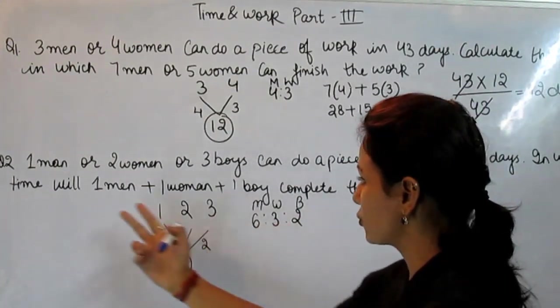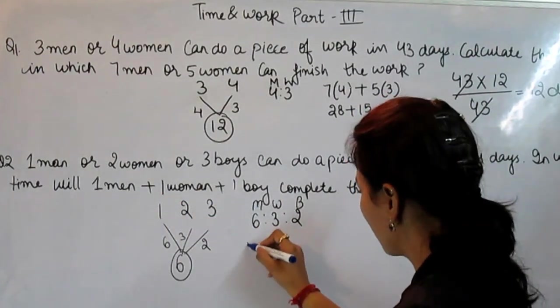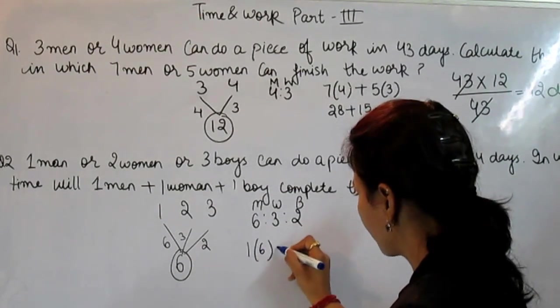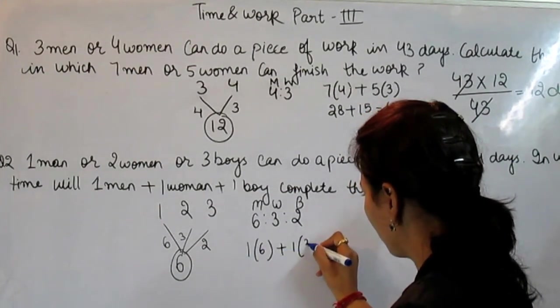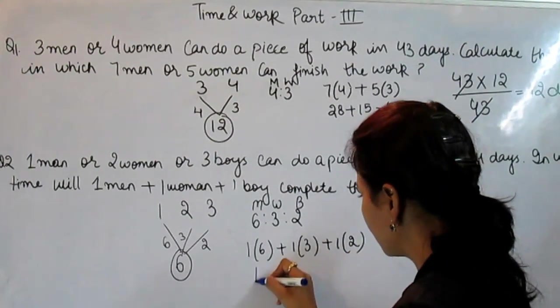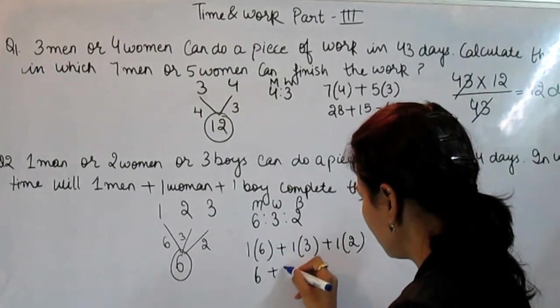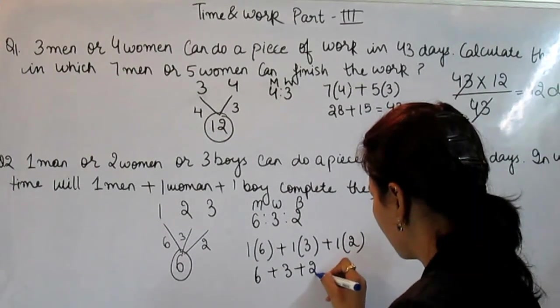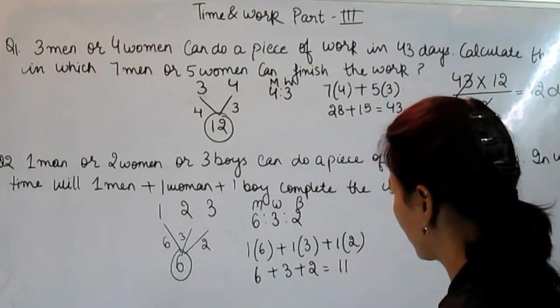When we put this ratio in this equation: 1 man plus 1 woman plus 1 boy, we get the same. That is 11.